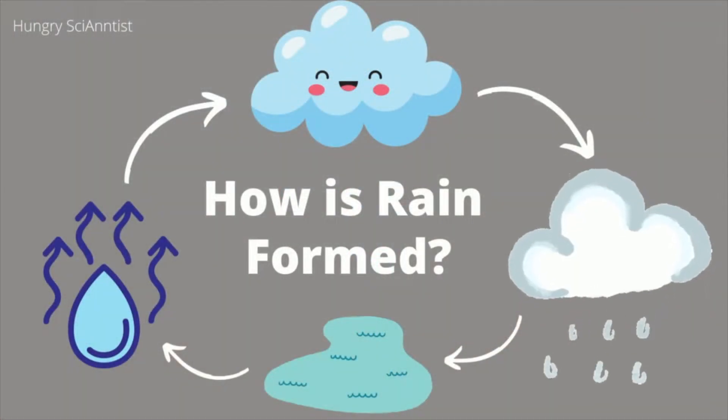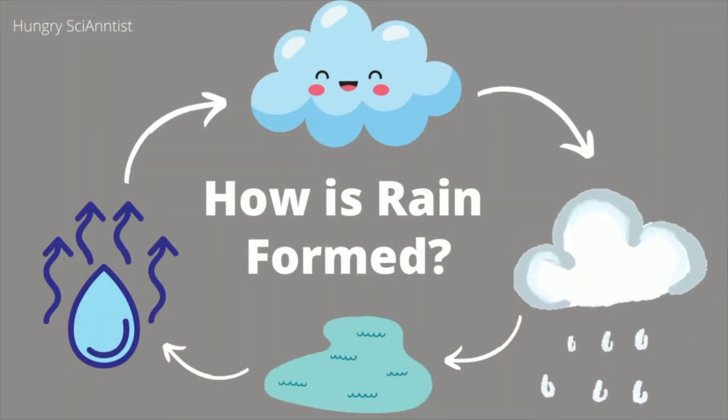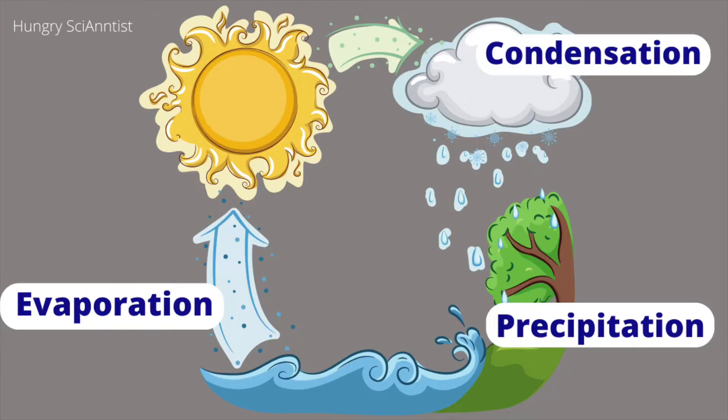How is Rain Formed? The formation of rain involves evaporation, condensation, and precipitation.